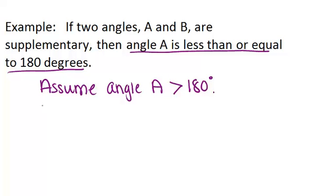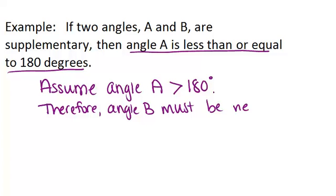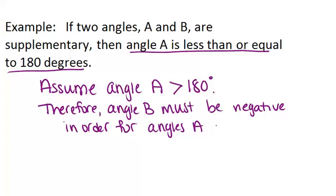So our next conclusion is therefore angle B must be negative in order for angles A and B to add to 180 degrees. In other words, in order for those two angles to be supplementary, if angle A is already greater than 180 degrees, angle B must be negative.